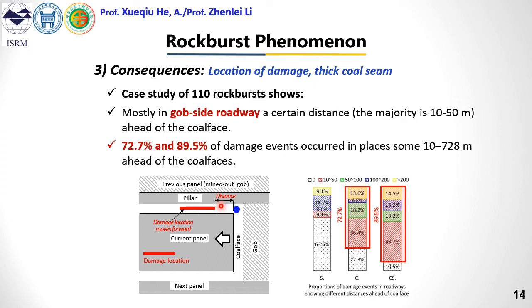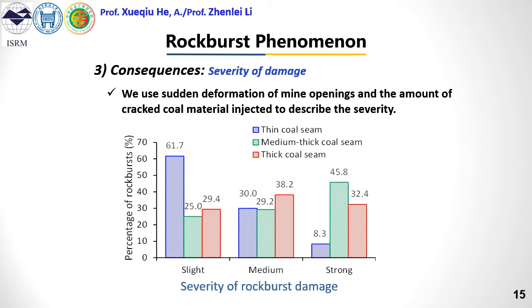When compared with single seams, rock bursts in cyclic seams move the damage zone forward. As for the severity of damage, we use the sudden deformation of mine openings and the amount of ejected coal material to describe severity. Rock bursts in thin cyclic seams are mostly slight, while in medium-thick and thick seams, rock bursts are more severe.